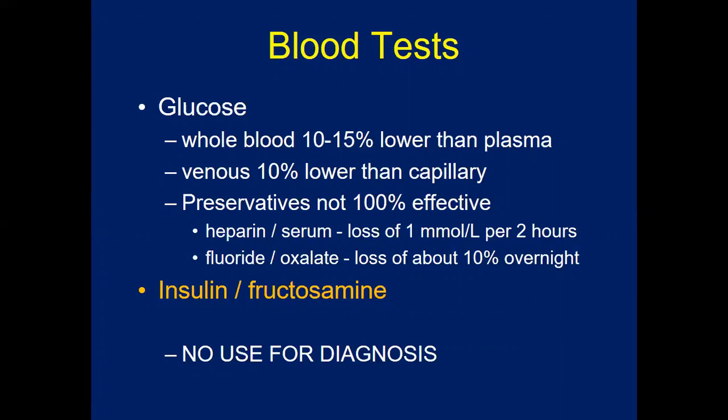For blood tests, simple capillary blood, whole blood, or serum may be used, but venous blood is preferred for accurate diagnosis of blood glucose levels. Whole blood levels are 10 to 15 percent lower than plasma, and venous blood is about 10 percent lower than capillary blood. Glucometers use capillary blood. There is no role of insulin or fructosamine in the diagnosis of diabetes mellitus.